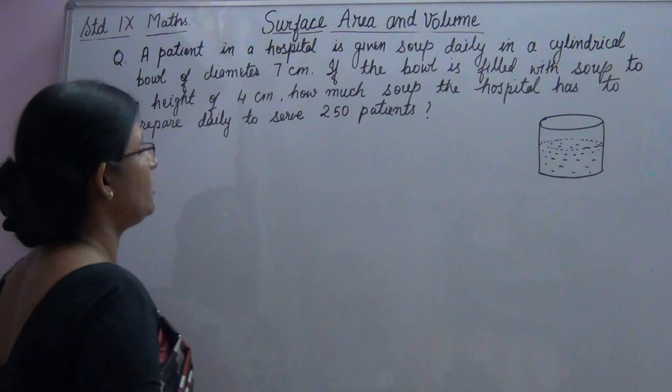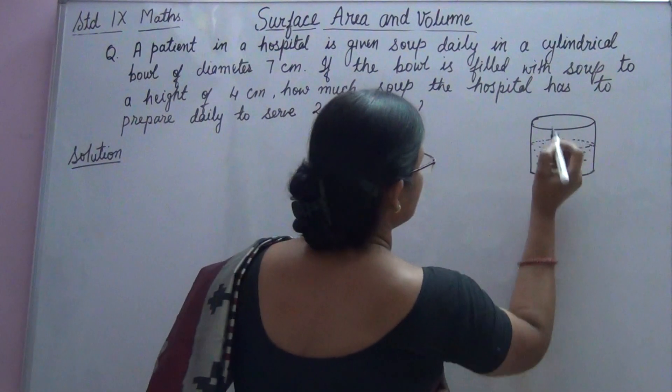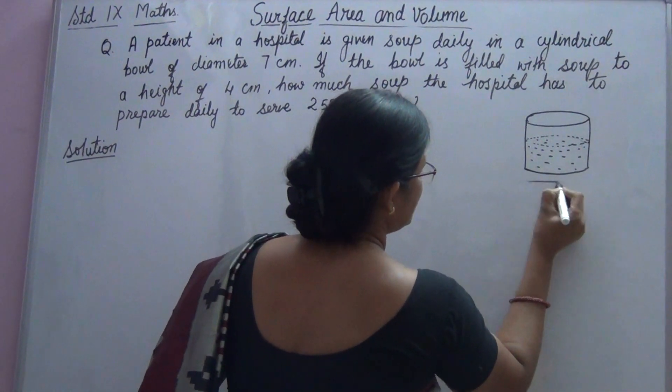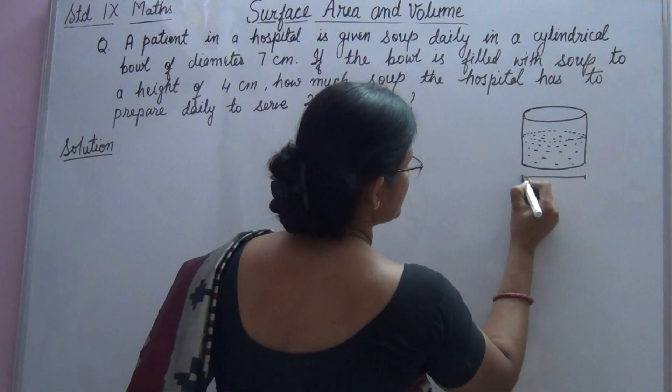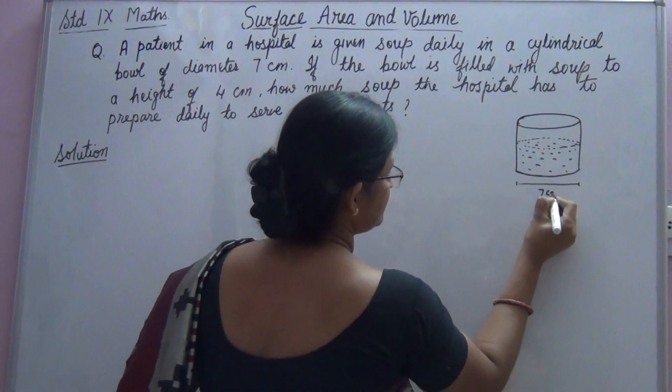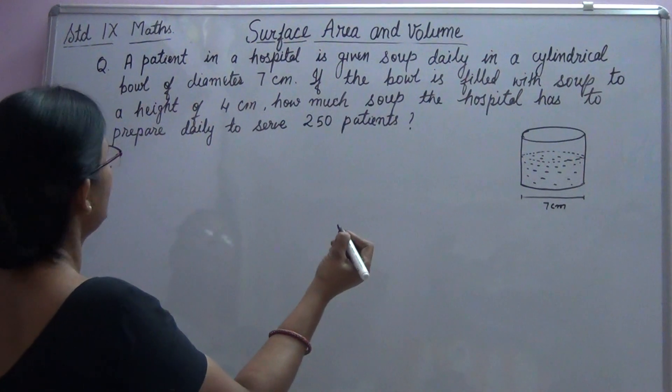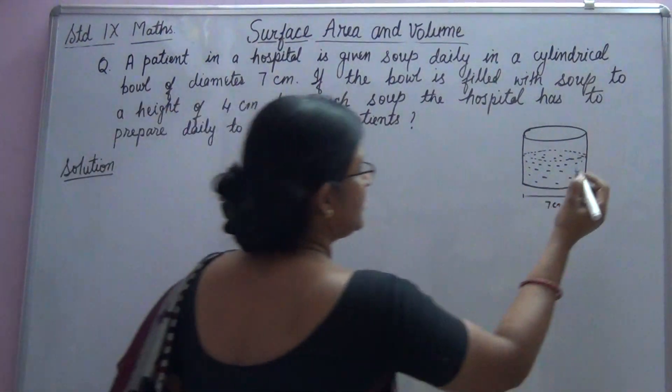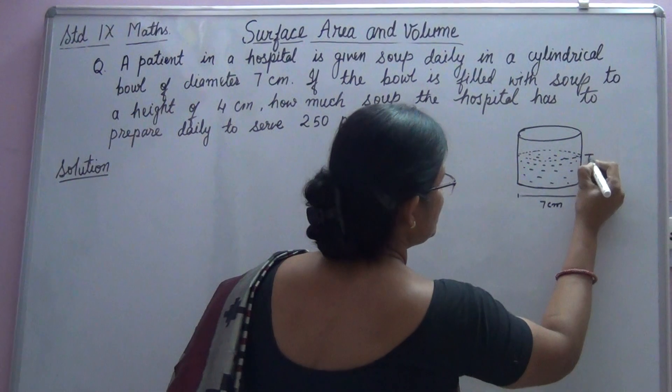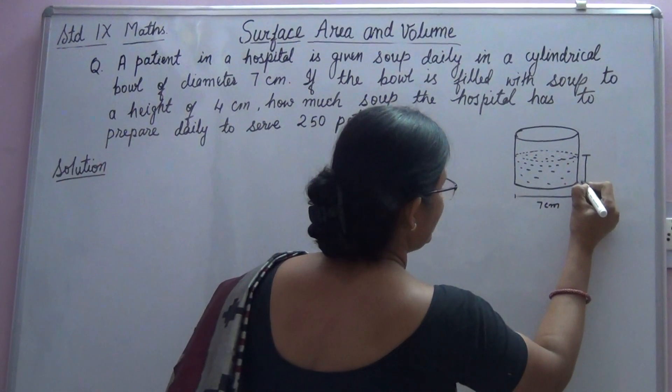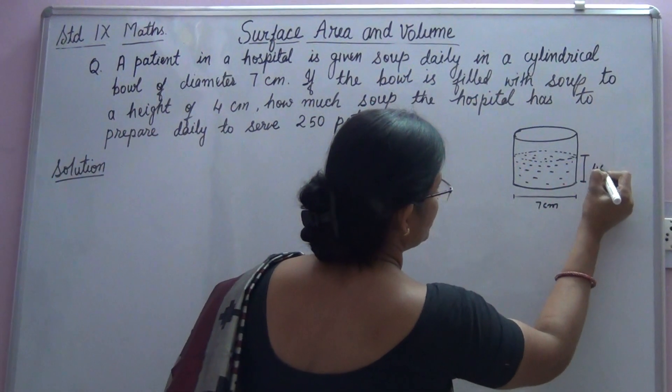As you can see here, diameter of the bowl is equal to 7 cm. And height is 4 cm. The height up to which soup is filled in the bowl is 4 cm.